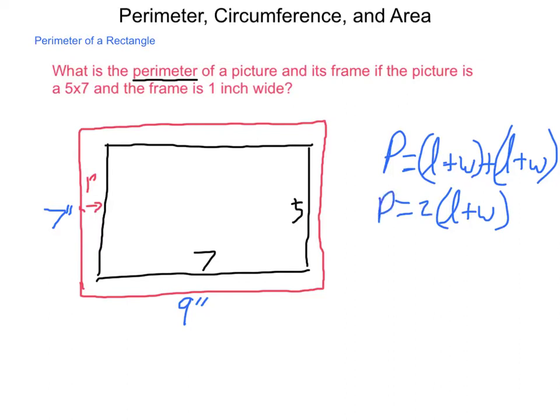Then we can just substitute in values. P equals 2 times 9 plus 7, which is 2 times 16. Now that 16, just as a side note, is something called the semi-perimeter, semi meaning half, so this is the distance halfway around the object. There are many situations where that becomes useful.